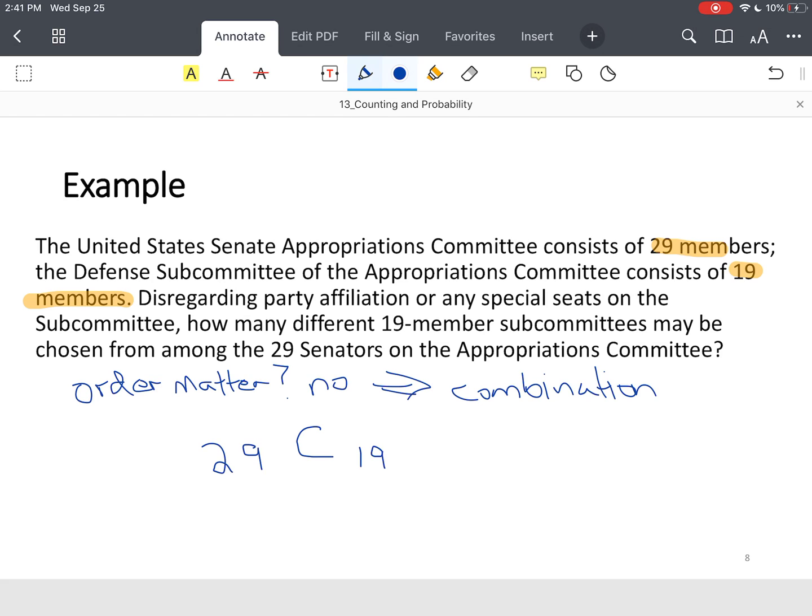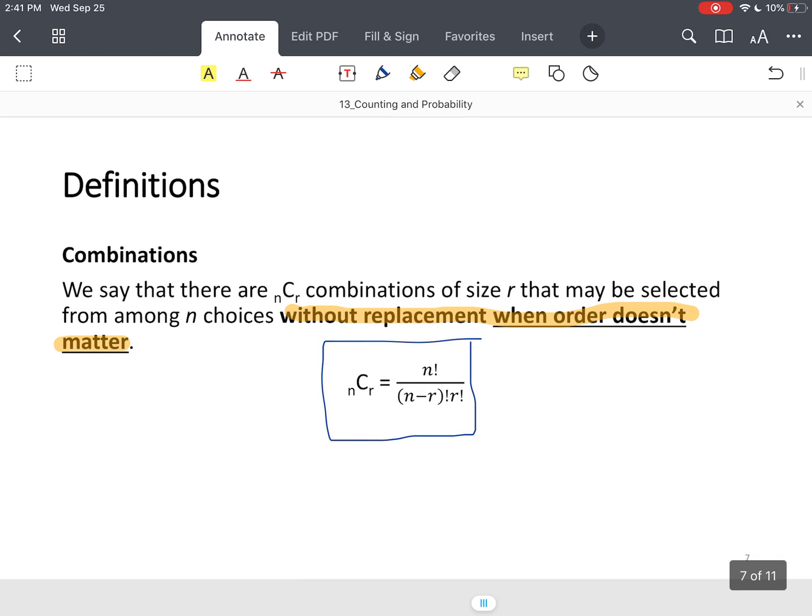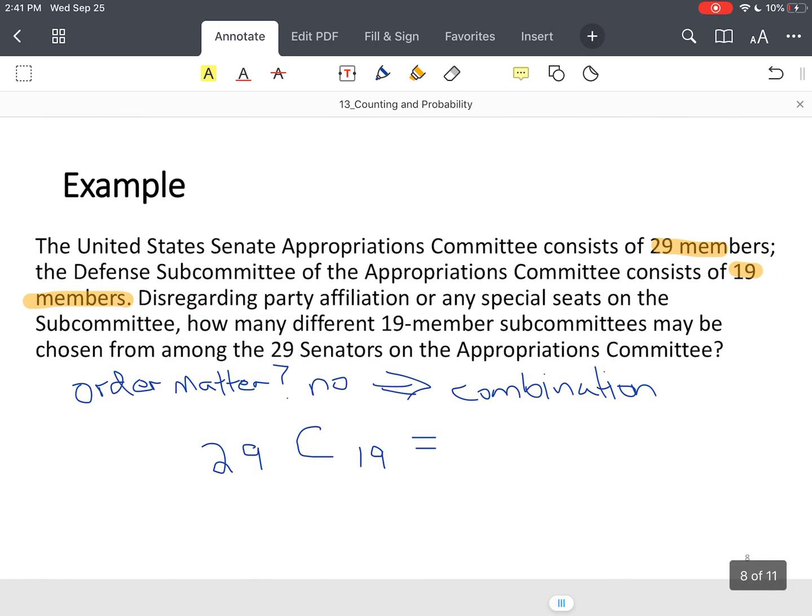So the formula that I use, now if you want to use a formula, let's go back real quick so you can see that formula. We can still use the formula and end up with the same result. But using technology is a lot faster. So the formula said it'd be 29 factorial over 29 minus 19 factorial times 19 factorial. That's the formula that you would use.